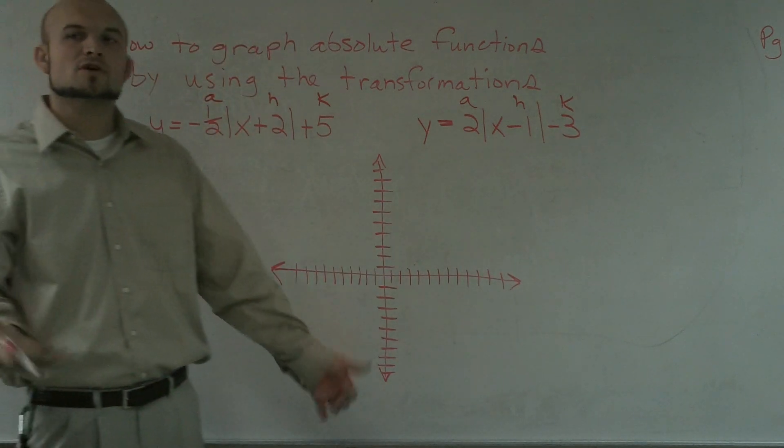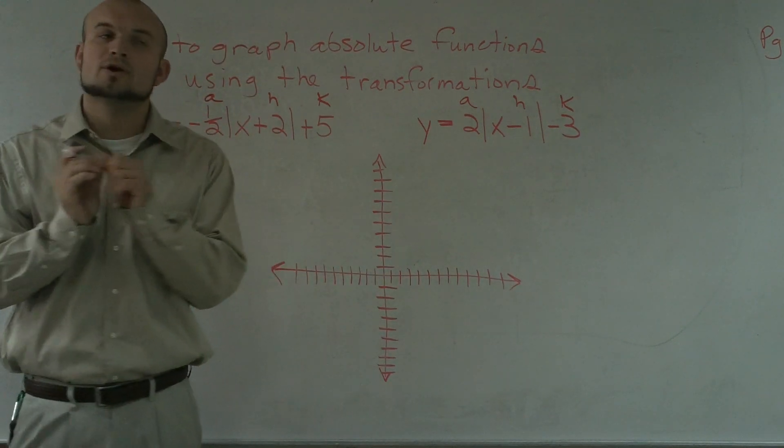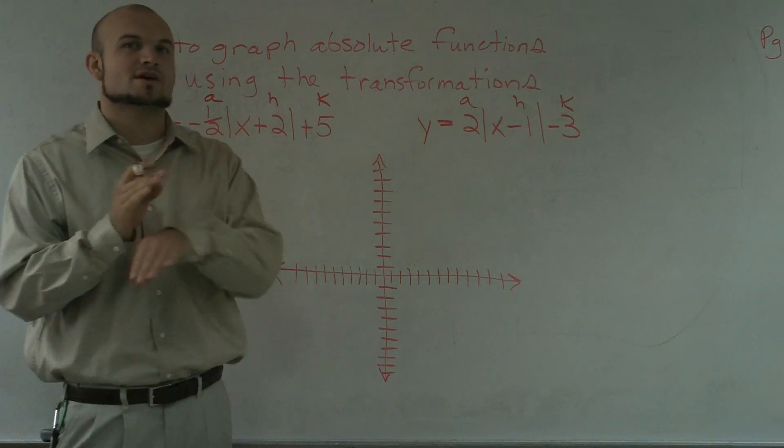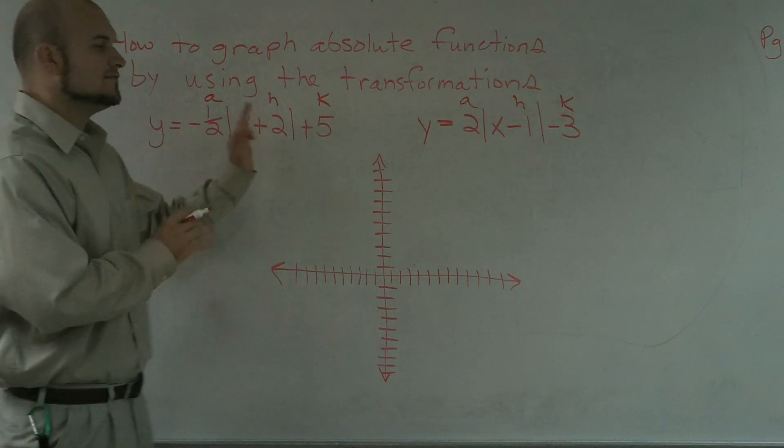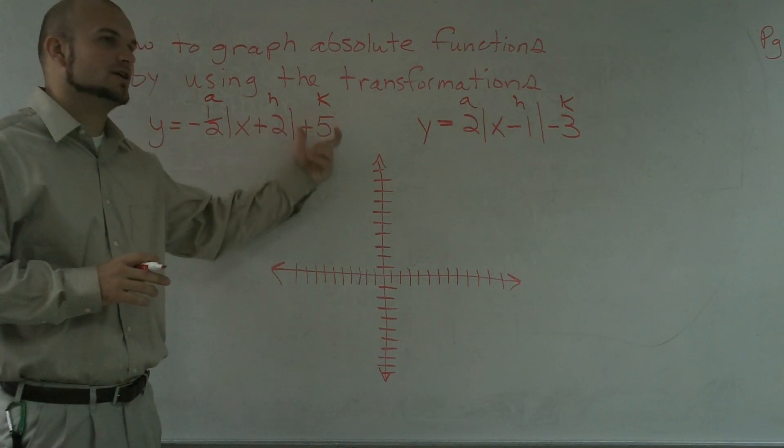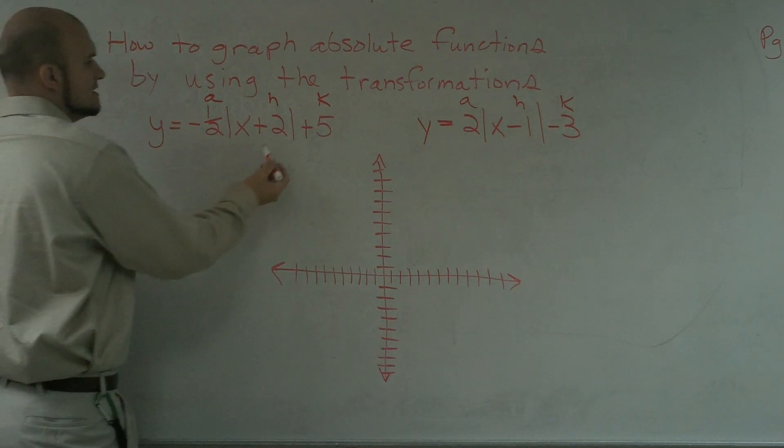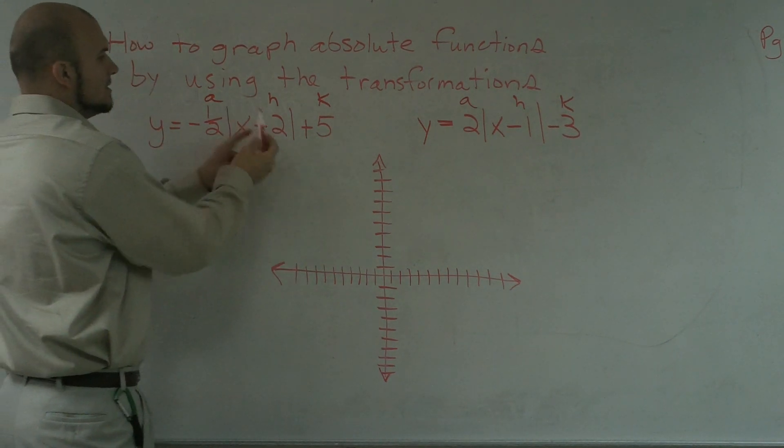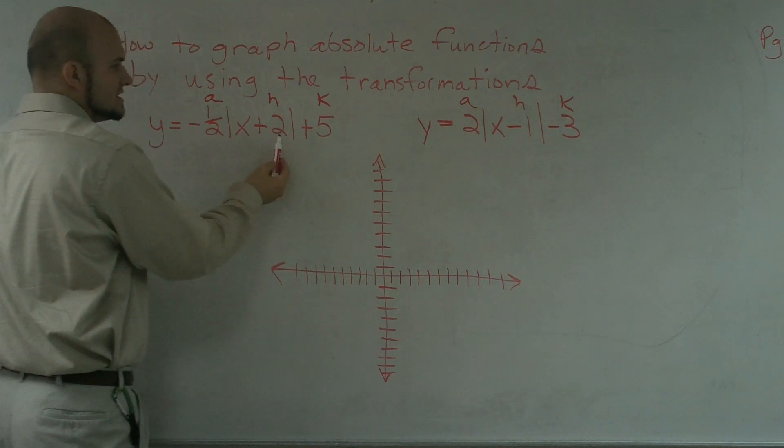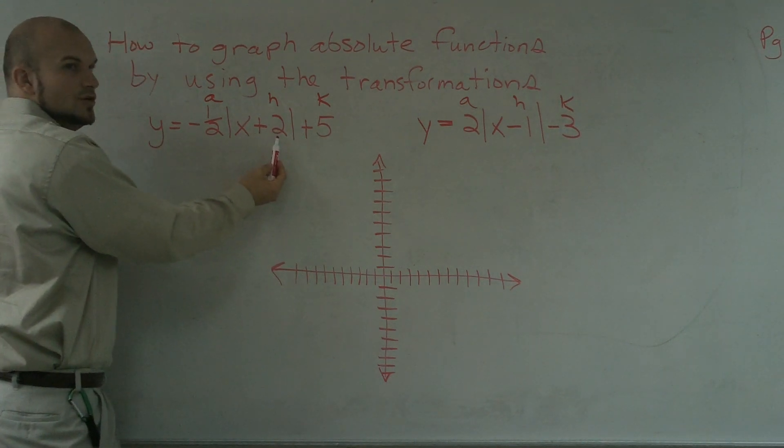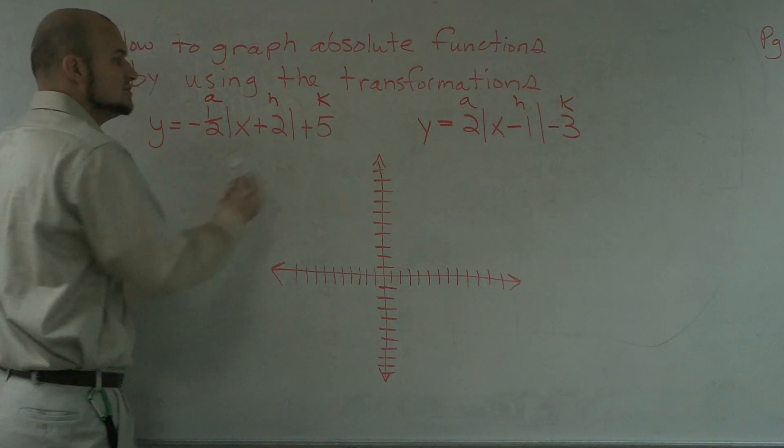So, the first thing we want to do is we want to find our vertex. And our vertex is going to be a point where the absolute value graph changes direction. So, our vertex in this problem is our h and our k. And what we notice is, our vertex is going to be our h and our k. So if we look at this, h tends to set the positive 2, that's actually going to tell us to shift to the left 2.